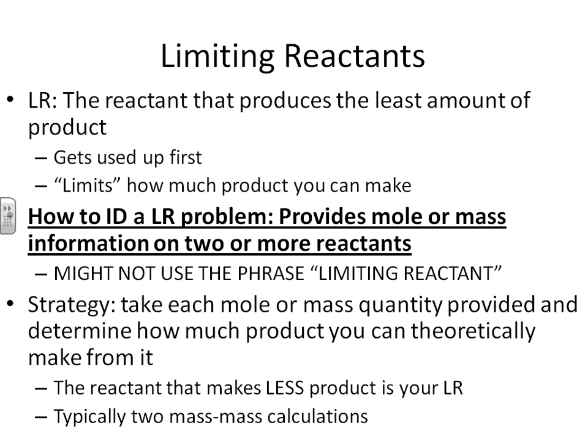The reason for that is because some reactants, when we look at a chemical reaction, get used up at a higher frequency. For example, every time you make a car, you're using four tires for every one steering wheel. So if you have five tires and five steering wheels, although you have the same amount of each, the tires are going to get used up faster because more of them are required.